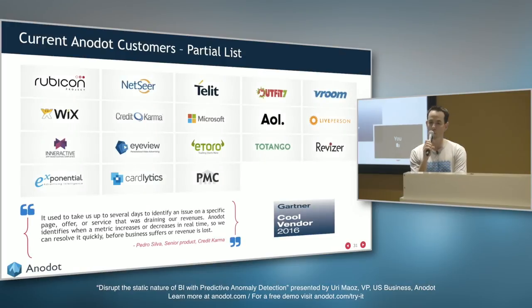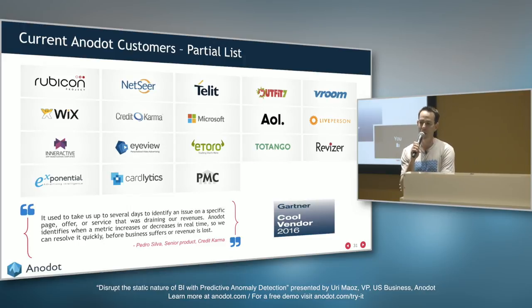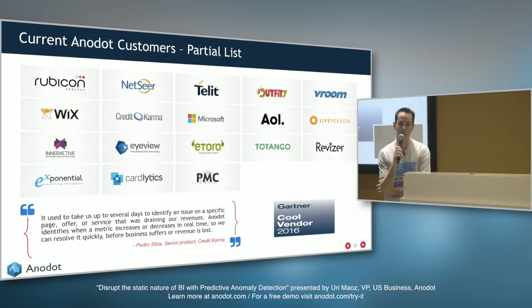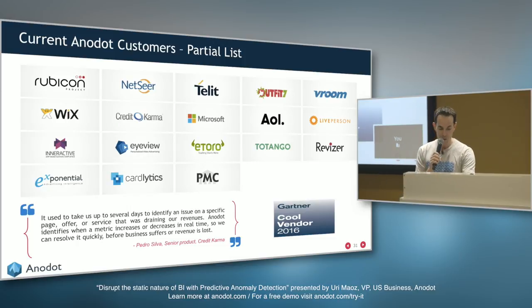Anodot is a company that delivers real-time business incident detection through anomaly detection, with strong customer traction across ad tech, e-commerce, fintech, and IoT. As companies collect more and more data, anomaly detection is becoming a critical capability that companies need.